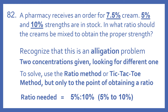So first we need to recognize that this is an allegation problem. We have two concentrations given and we're looking for a different one that is in between the concentrations in stock. To solve, we can use the ratio method or the tic-tac-toe method. But with this problem, we're only looking for the ratio between the creams that we have.